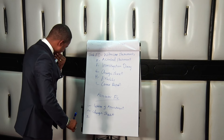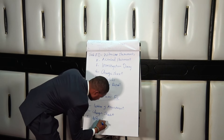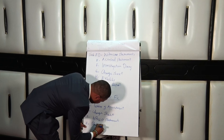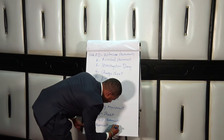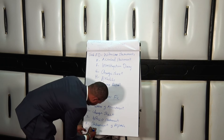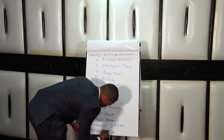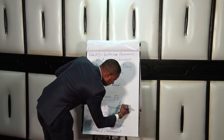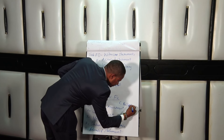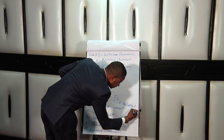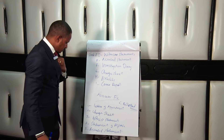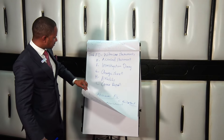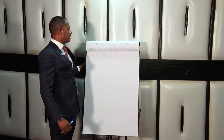Number three, we have the witness statements. Number four, we have the statement of defense. Number five, we have the accused statement. Number six — very important — we have the bail and bond terms. This one you can rearrange in any way, but those are the contents of the advocates file.